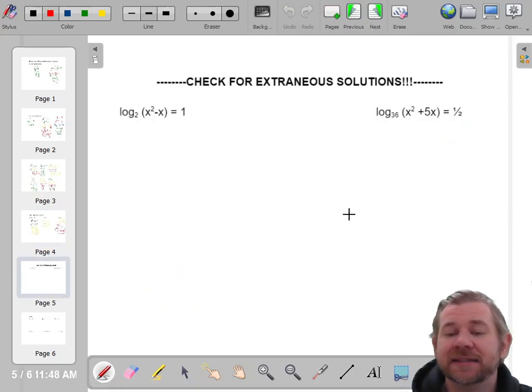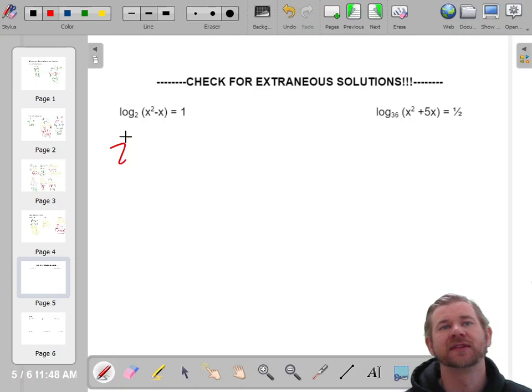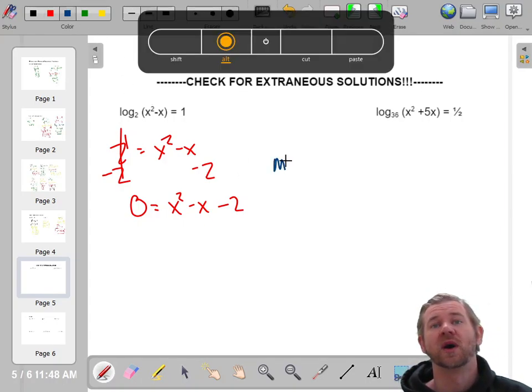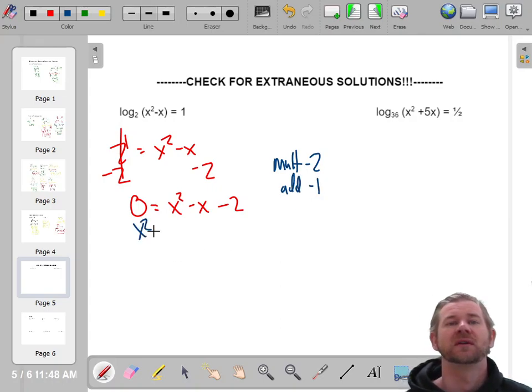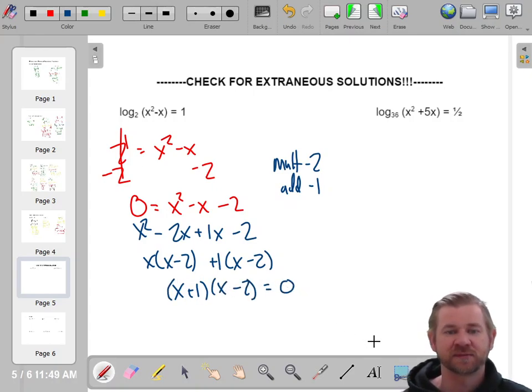These usually feel more natural for people because we're better at going from logs to exponentials. But it is pretty much all the same steps, just backwards. Now, when you are rewriting these, you do need to be careful. And these are going to be tougher to solve. Anytime you see an x squared especially, you've got to be really careful. I'm going to rewrite this as an exponent. And now I know that I have two different degrees, so I have to get everything on one side. 0 equals x squared minus x minus 2. So we've got to factor, because it's quadratic. So what multiplies to negative 2 and adds to negative 1? That would be negative 2x and positive 1x. I factor by grouping. x plus 1.